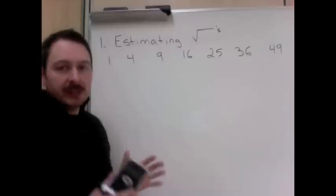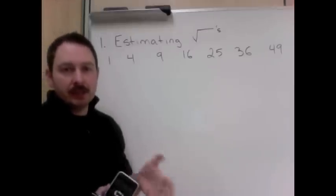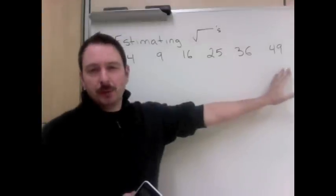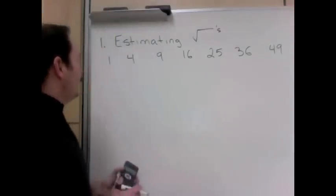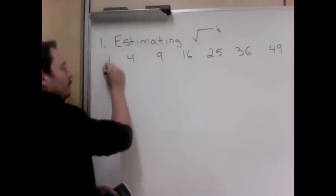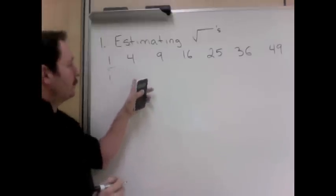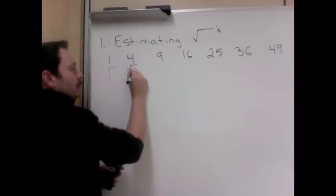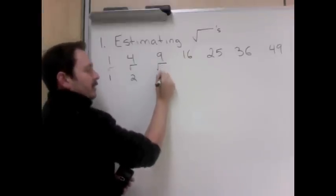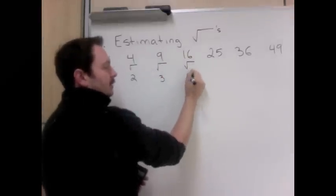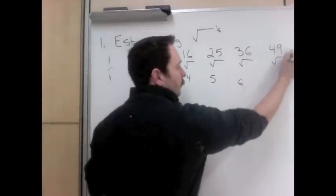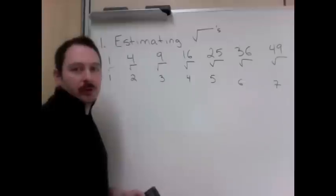Estimating square roots. You won't always have a calculator handy and maybe you need to know the square root of something. What I've put up here is the perfect squares, and we worked with perfect squares last chapter. 1 times 1 is 1, so the square root of 1 is 1. 2 times 2 is 4, so the square root of 4 is 2. Square root of 9 is 3, square root of 16 is 4, square root of 25 is 5, square root of 36 is 6, square root of 49 is 7, and this goes on and on.